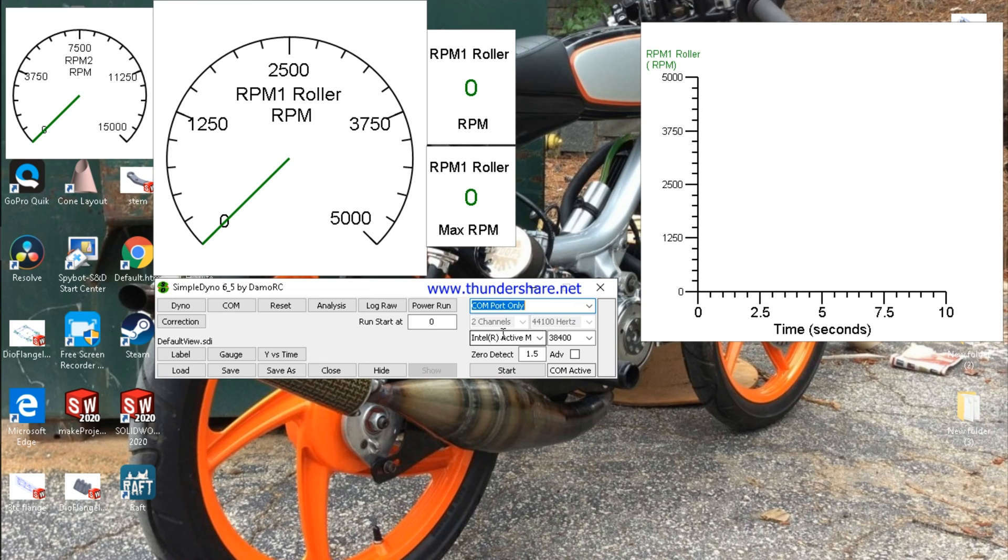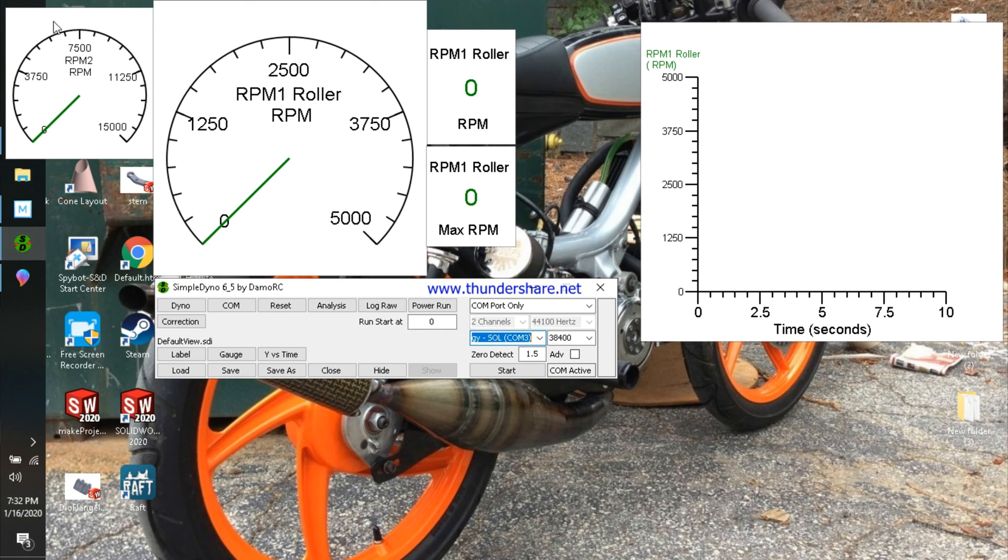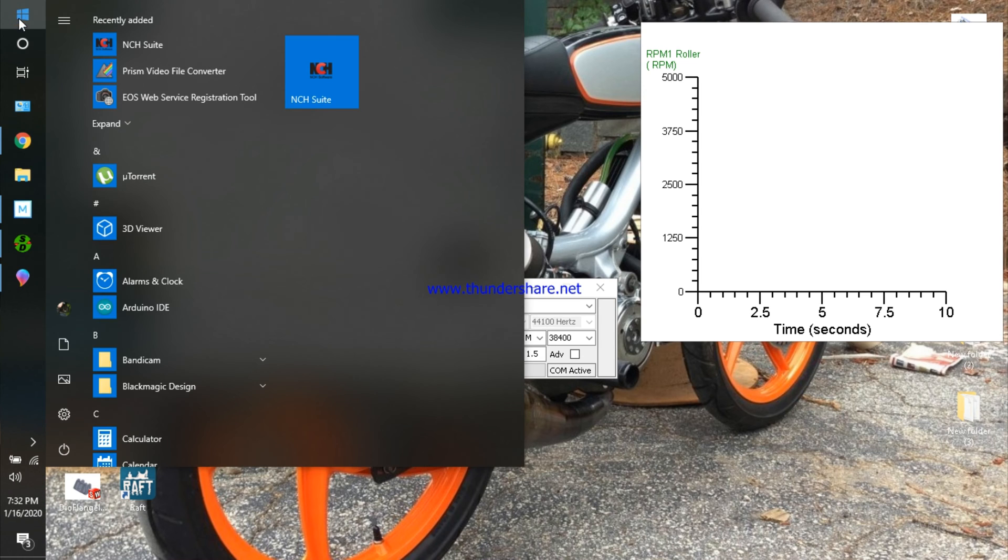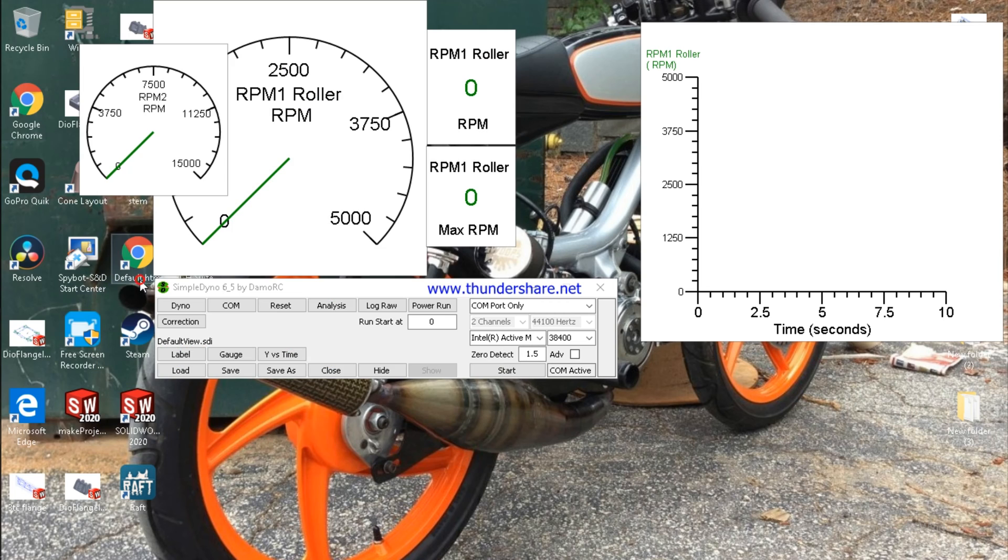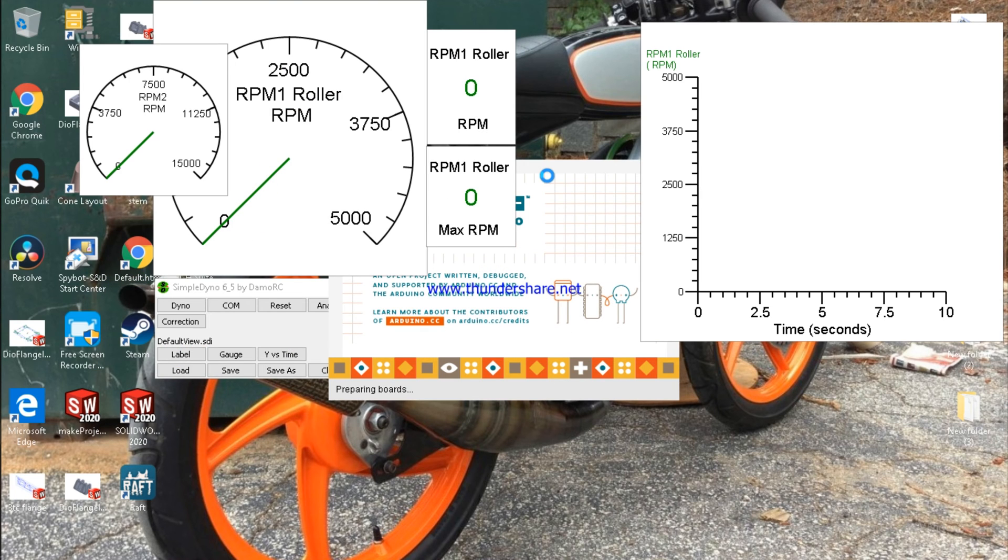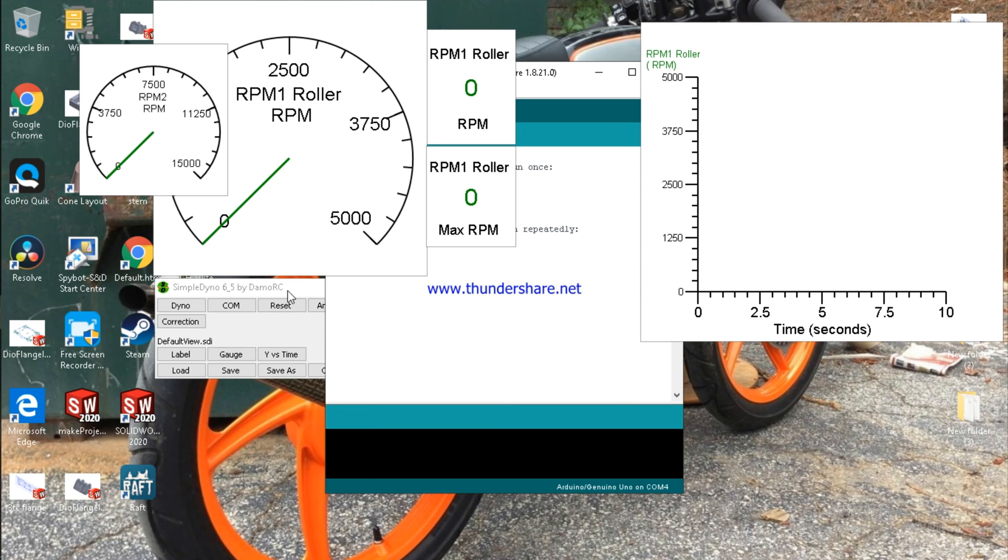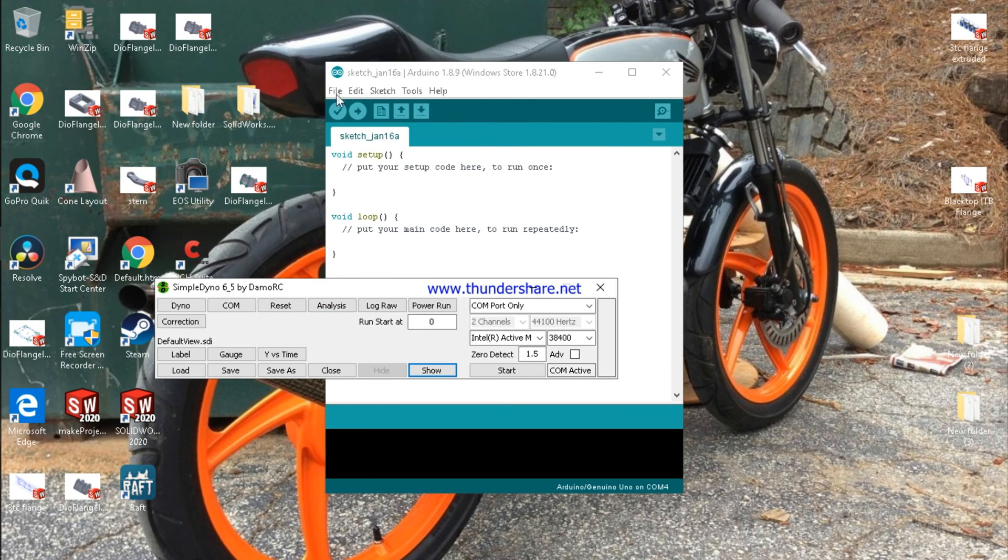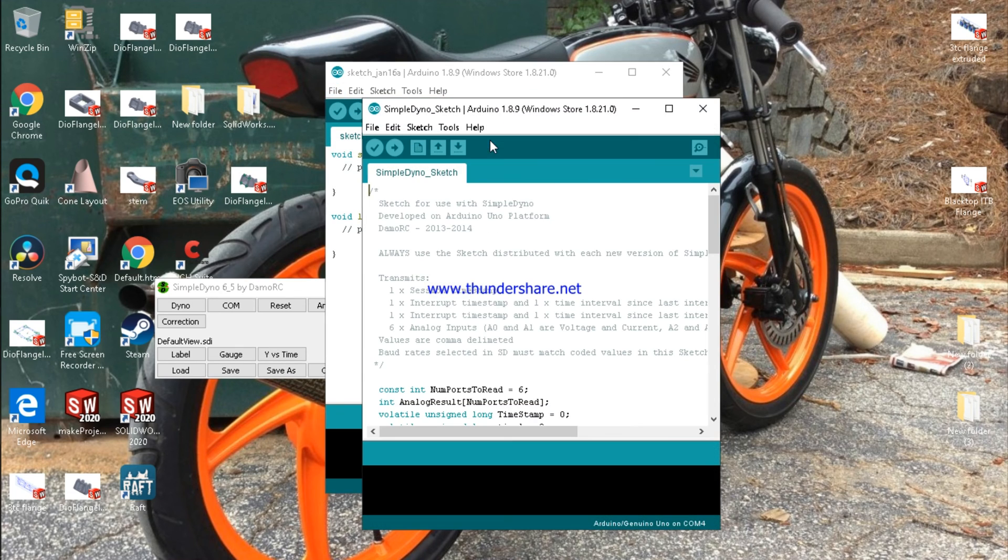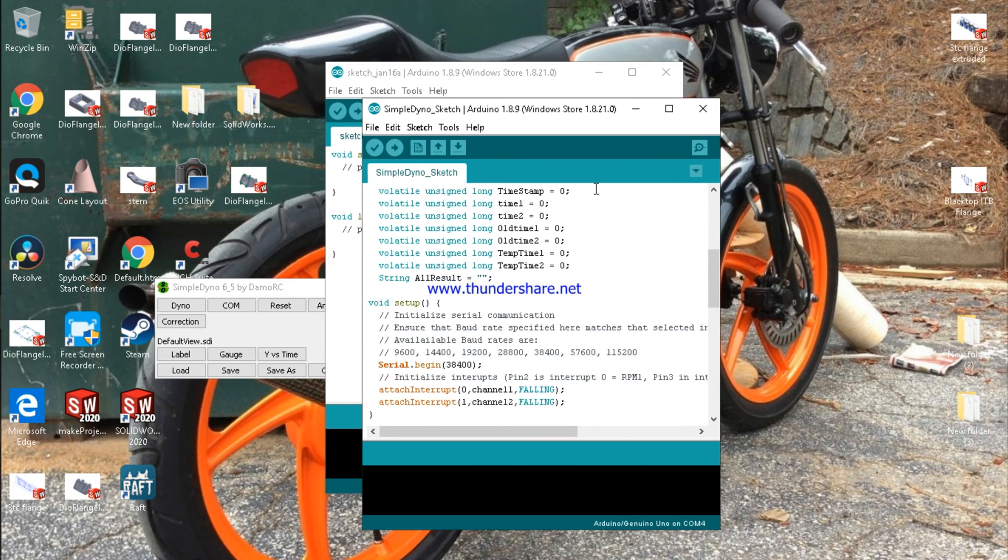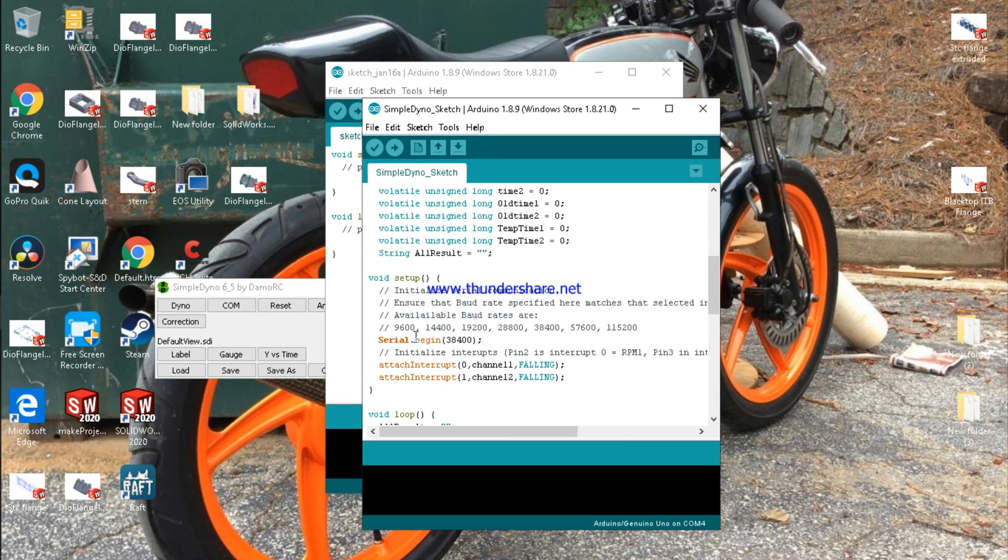We're COM port only, and then you have to pick your Arduino COM port from the dropdown, set your refresh rate. Mine is set different than most. I think on the stock sketch it's 9600 baud. If you want to know what your baud rate is within the sketch, you can check it. Open up your Arduino software, open recent, simple dyno sketch, and it will tell you right there on that line - serial begin. You can set that to any one of those, but they have to match or it's not going to work.